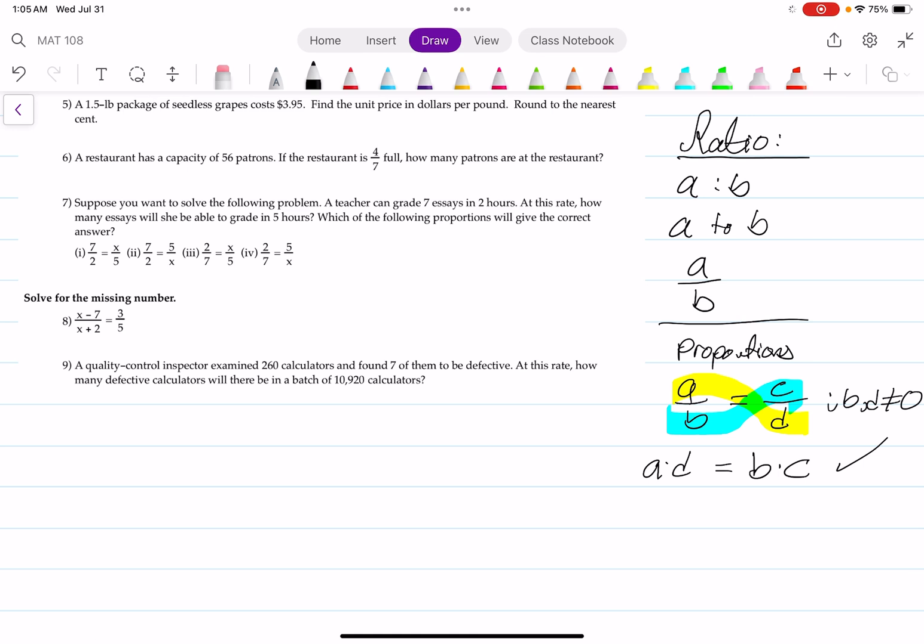A 1.5 pound package of seedless grapes costs $3.95. It wants you to find the unit price in dollars per pound. Round your answer to the nearest cent. Let's find that unit price.